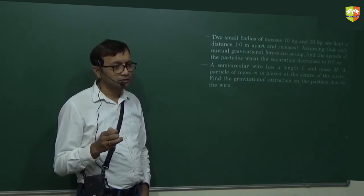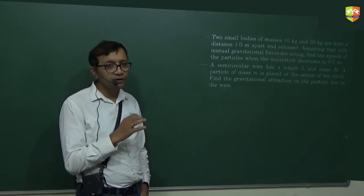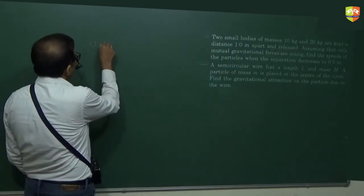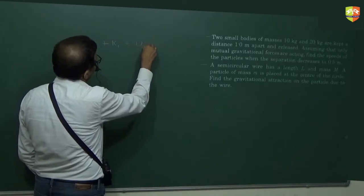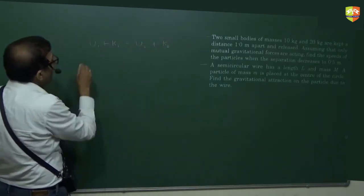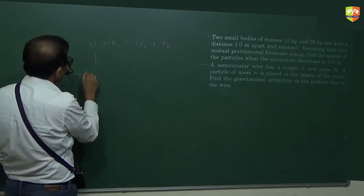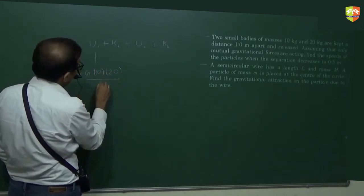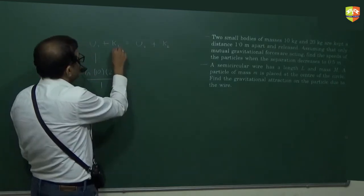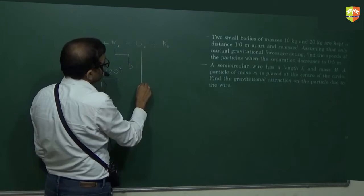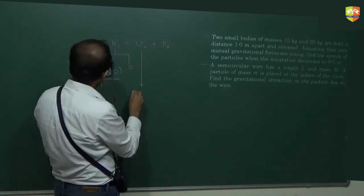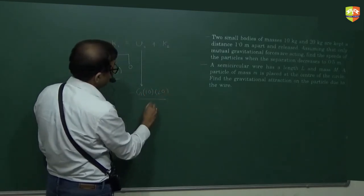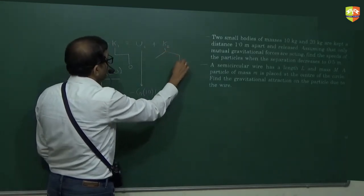But the velocities of both of them will not be same. Then what you'll do? The momentum conservation of velocity. What happens to velocity of center of mass? Conservation of momentum will use, right, because net external force is zero. Okay, so U1 plus K1. U1 is minus g times 10 times 20, m1 m2 divided by r. K1 is zero.